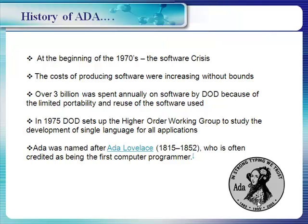History of ADA: At the beginning of the 1970s, there was a software crisis. The cost of producing software was increasing without bounds — over 3 billion was spent annually on software by the DoD, because of the limited portability and reuse of the software used. In 1974, DoD set up the higher-order working group to study the development of a single language for all applications. ADA was named after Ada Lovelace, who is often credited as being the first computer programmer.